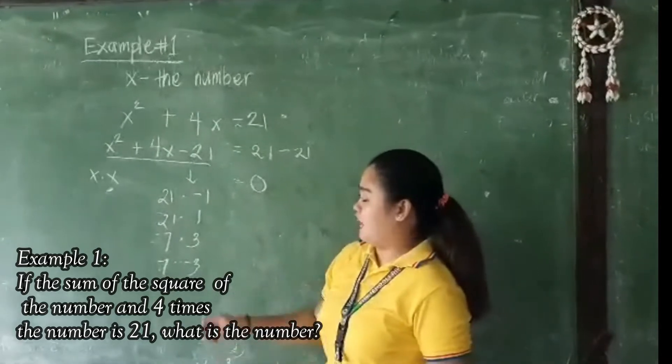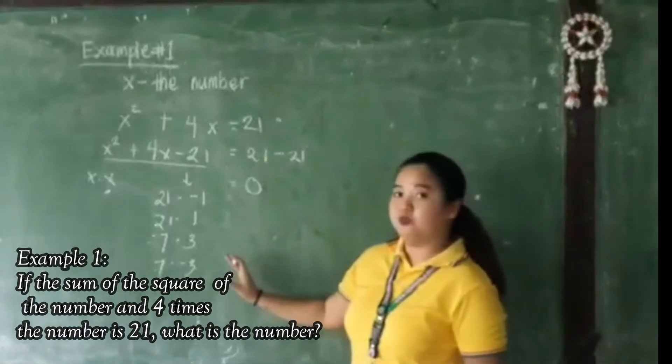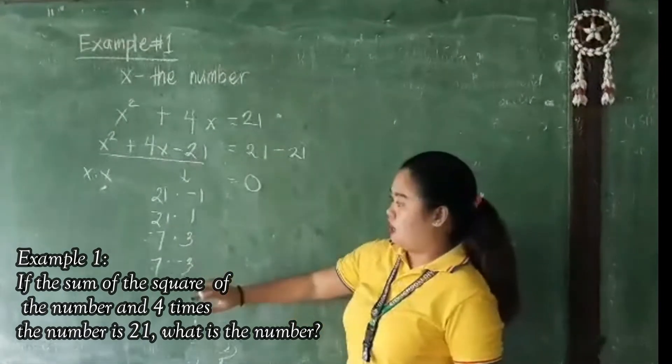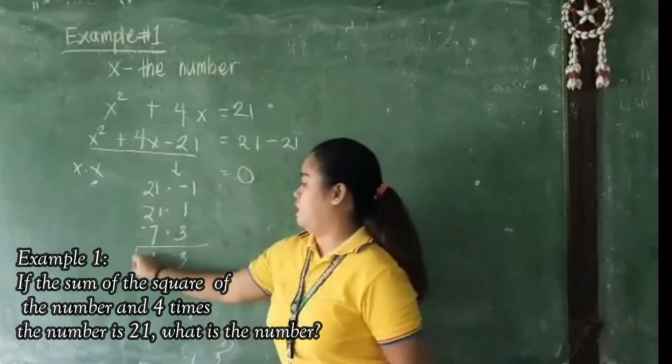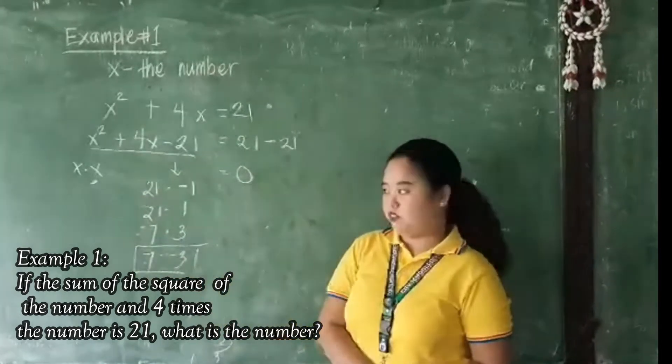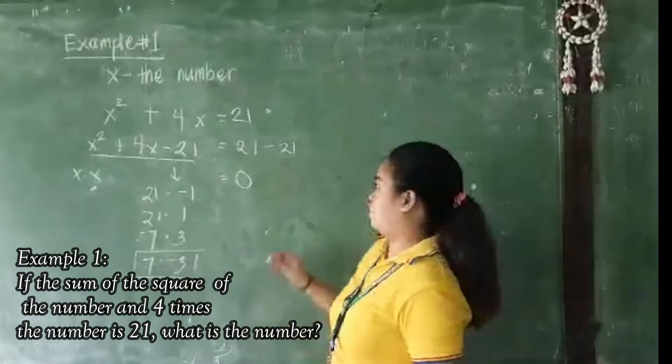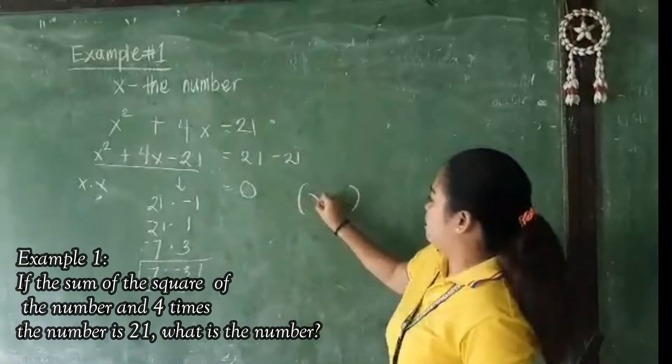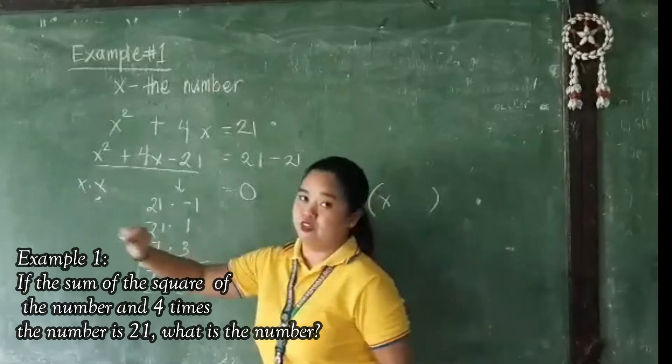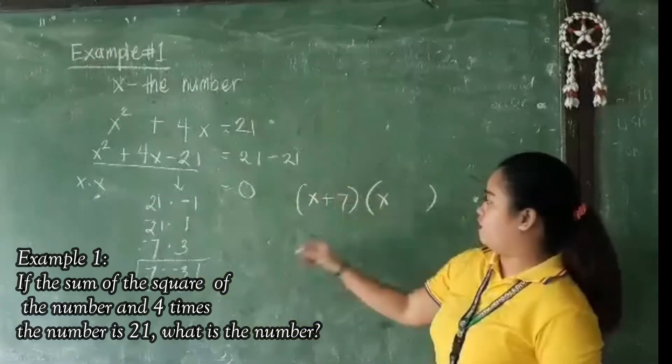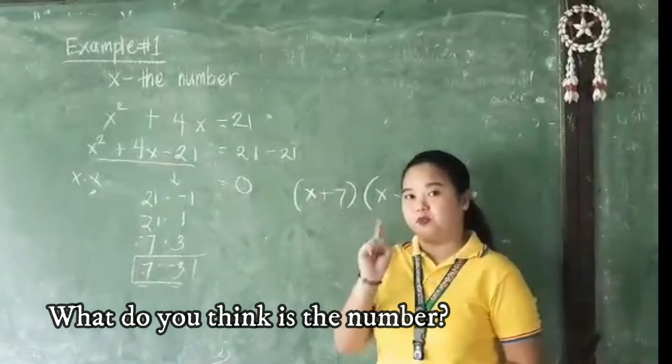So, to come up with the middle term or our last term in our factors, we need to find what is the number that has the sum of positive 4. So it will be 7 and negative 3. So these two terms will be our last term in our factors. So our factors are x for the first term, and for the last term is positive 7 and negative 3. So what will be our answer in our example number 1?